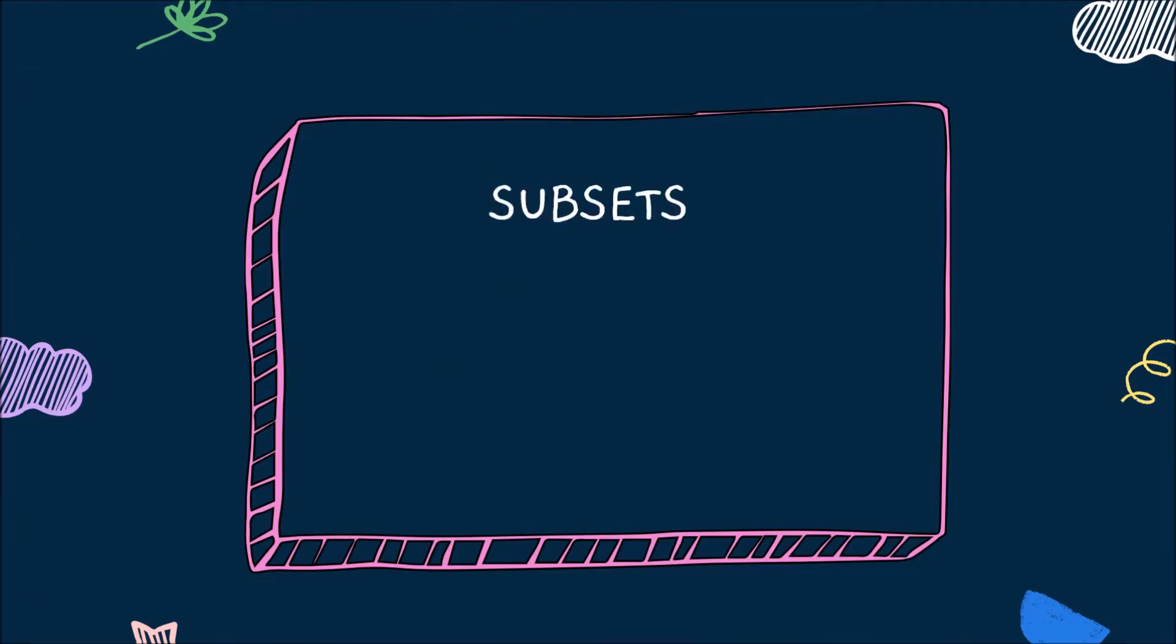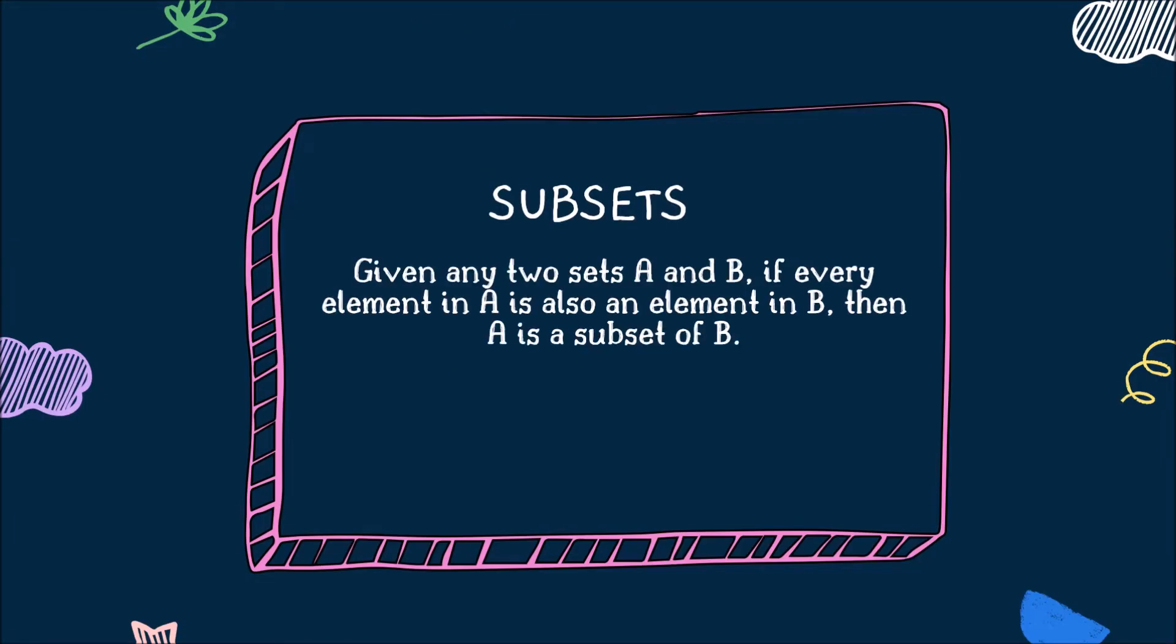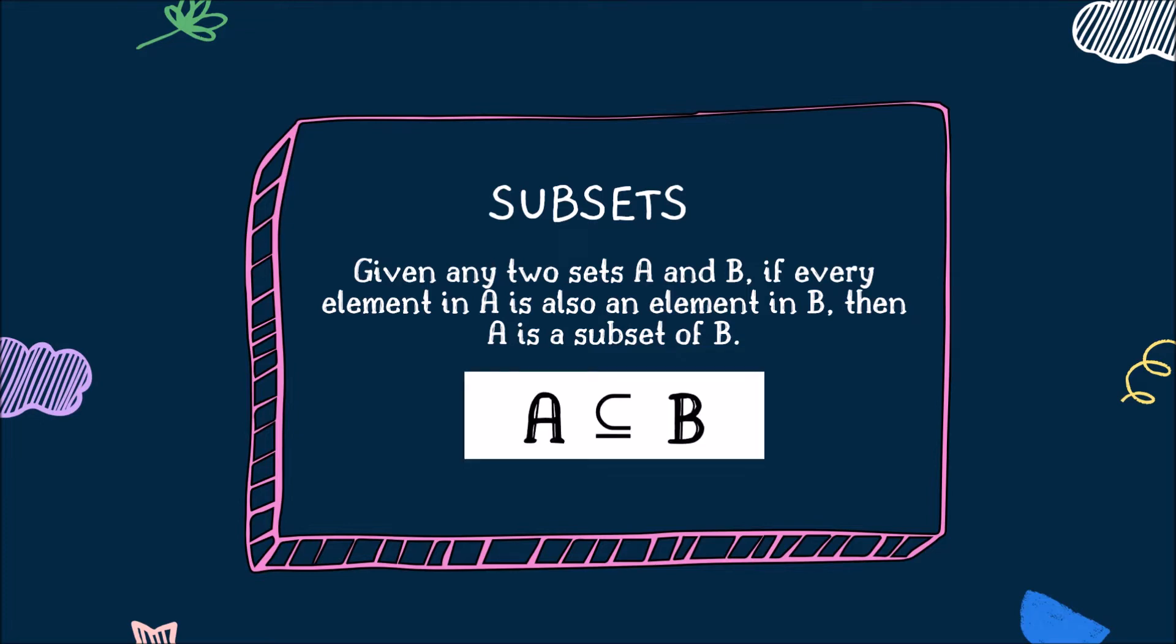What is subsets? If you are given any two sets A and B, if every element in A is also an element in B, then A is a subset of B. This can be written using this symbol.